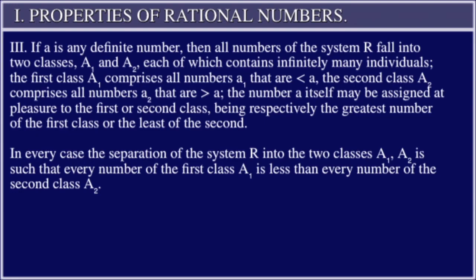The second class A₂ comprises all numbers a₂ that are > a. The number a itself may be assigned at pleasure to the first or second class, being respectively the greatest number of the first class or the least of the second. In every case the separation of the system R into two classes A₁, A₂ is such that every number of the first class A₁ is less than every number of the second class A₂.